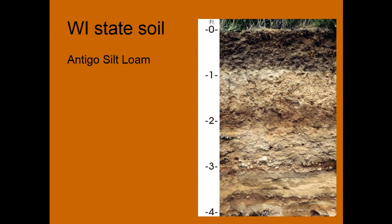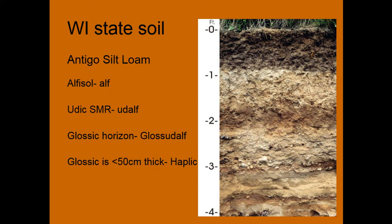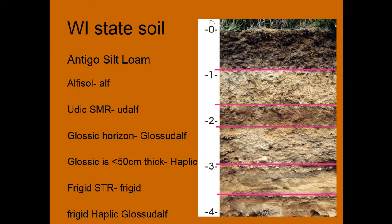There's a song about it if you need help remembering. So it's an Alfisol — we take the 'alf' off of that. It has a udic soil moisture regime, so it's a Udalf. And then it has a glossic horizon, so it's a Glossudalf. The glossic horizon is less than 50 centimeters thick, which makes it a Haplic. And it has a frigid soil temperature regime, which is based on how long the soil is cold at a certain depth. So all in all, our Wisconsin state soil, the Antigo Silt Loam, is a Frigid Haplic Glossudalf. And we can sort of pick out some horizons here — we would identify the horizons and then key it out to a Frigid Haplic Glossudalf.